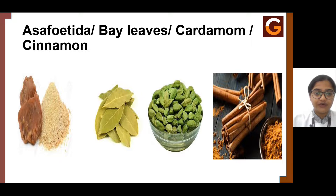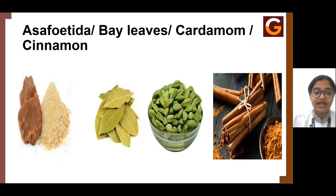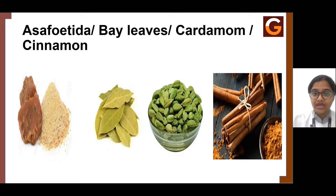The first spice you can see in the picture here in the PPT is asafoetida. It is also called as hing in common language, or also called as stinking gum. This is basically a dried gum acquired from a taproot of a herb found in Iran, and they are mildly used for tempering. Whenever we temper certain gravies and curries, especially in Indian cuisine, a pinch of hing is added. It also acts for medicinal purposes, helping in digestion, and is also widely used in certain pickle preparations and gravies.